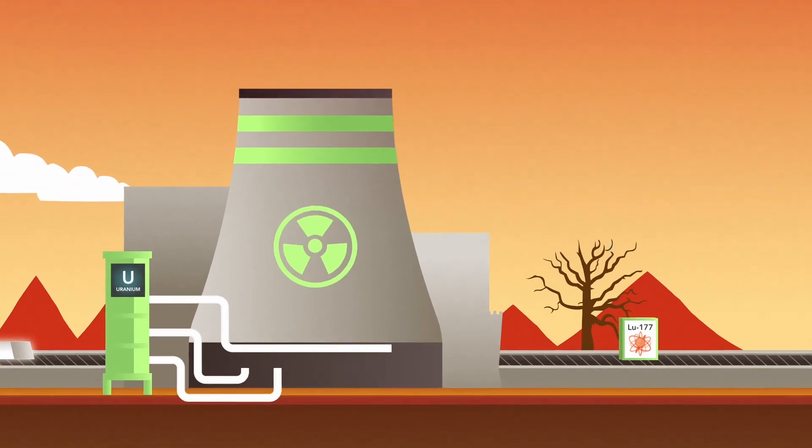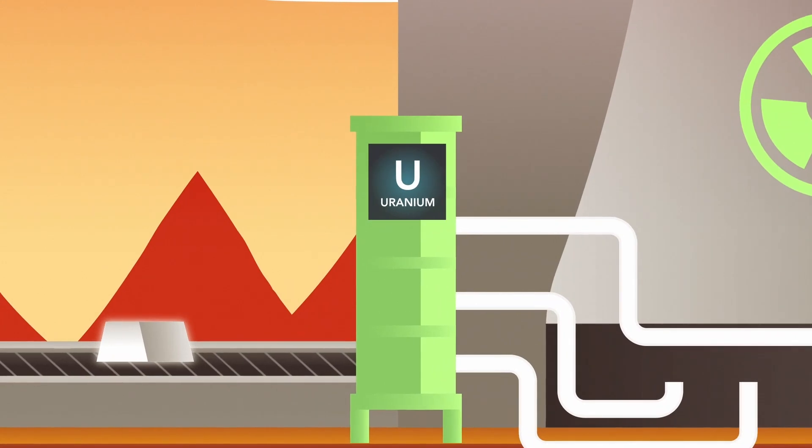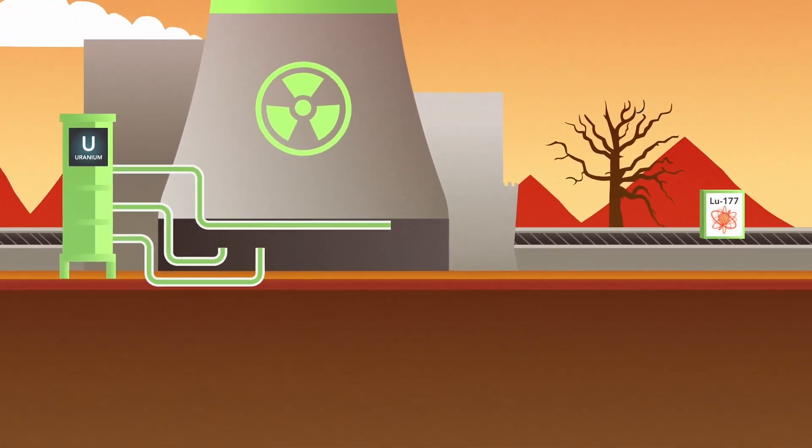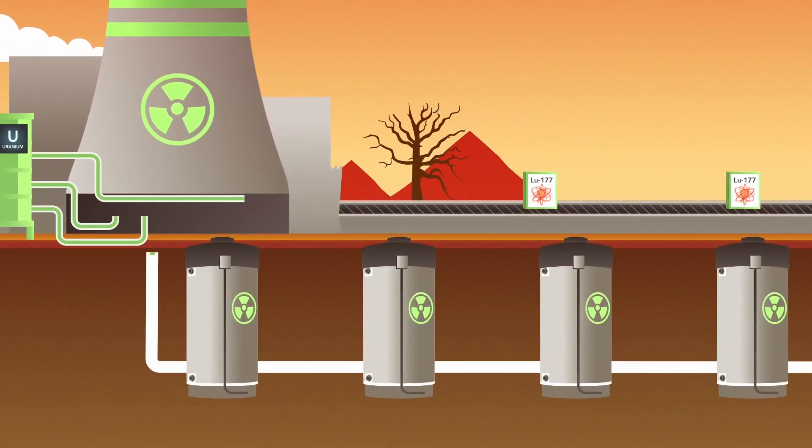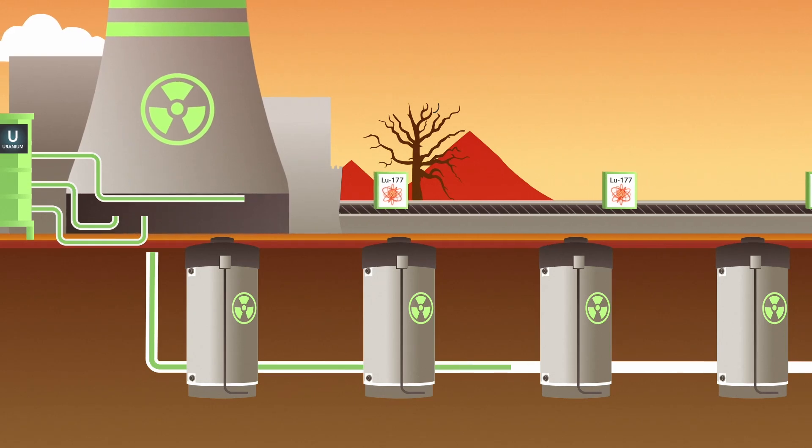The nuclear reactors used to produce Lutetium-177 are powered by uranium fuel, which leads to the production of high-level radioactive waste that takes over a million years to decay and must be safely disposed of in long-term radioactive waste storage facilities.